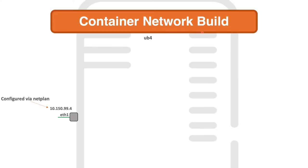Now let's focus on the container network build. These are the high-level steps to perform on the Ubuntu server that's going to host Docker, the containers, and OpenVSwitch. Step one: configure an Ethernet interface as part of the underlay. I've used Netplan and configured this interface with the IP address 10.150.99.4, which physically connects to the layer 2 switch and then onto the hardware VTEP. It shares a subnet with the hardware VTEP as part of the underlay.